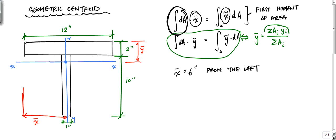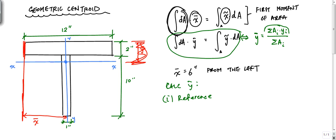When we define a distance, we need a reference. To calculate y-bar, the first thing we need is to select a reference — this is super important. I can choose any location I want as my zero. I'll choose this top edge as my reference, so this line will be my datum for y-bar, and I'm going to define everything from this top line.